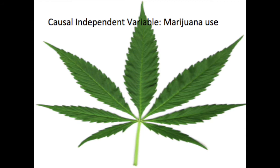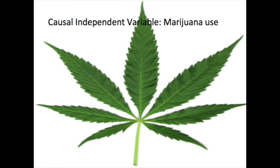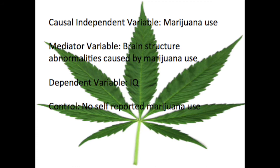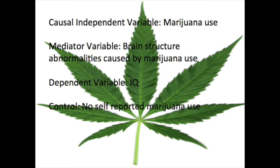The mediator variable is the amount of brain structure abnormalities or alterations thought to be caused by marijuana use in the association connectivity level. The dependent variable is the participant's IQ. The control group was no self-reported marijuana use, confirmed through urinalysis. The research design used was a two-sample t-test.